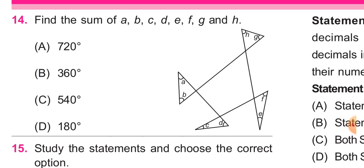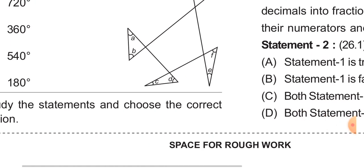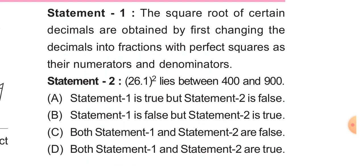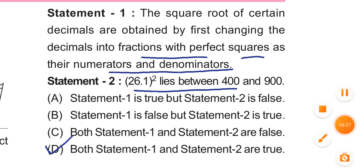Question 15: study the statements and choose the correct option. Statement 1: the square root of certain decimals are obtained by first changing the decimals into fractions with perfect squares as their numerators and denominators. Statement 2: 26.1 square lies between 400 and 900. Both statements are true. So students, our sample paper is complete. Stay connected for recent updates of upcoming sessions. Thank you.